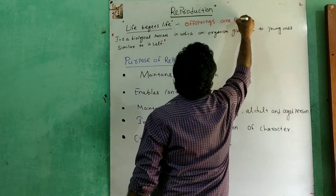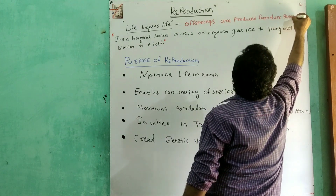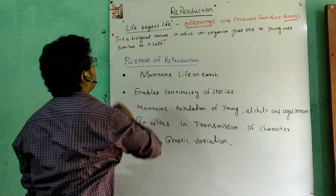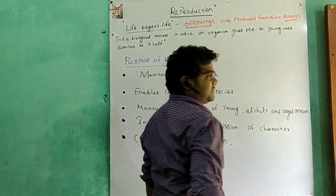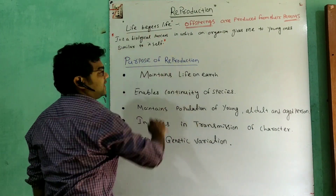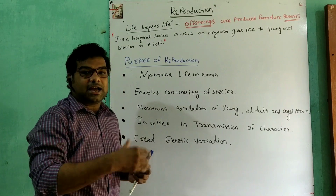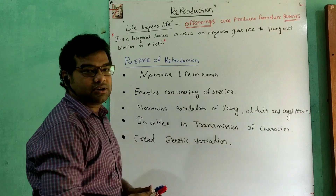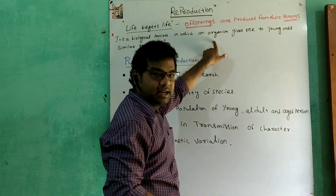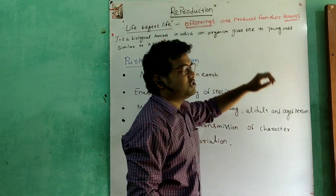Offspring are produced from their parents. Reproduction is a biological process in which an organism gives rise to young ones similar to itself.